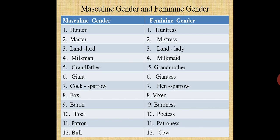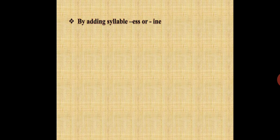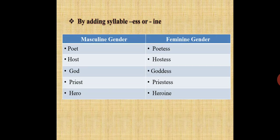Now let us know about some rules to change masculine gender into feminine gender. First rule: by adding the syllable '-ess'. Masculine gender — poet, feminine gender — poetess. Similarly, host — hostess, god — goddess, priest — priestess, hero — heroine.